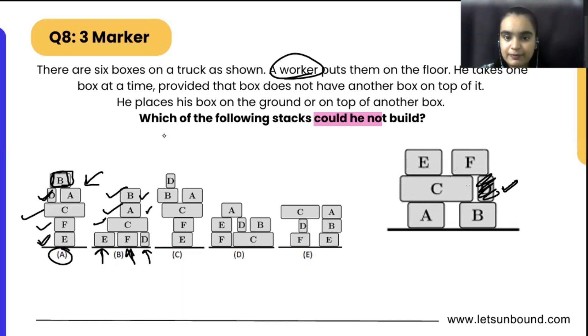But if you see, we have placed B here - we cannot do that because just above B we are having D. So we have to place D first and then we can place B on it, because the worker is going to remove D first and then he is going to place B over it.